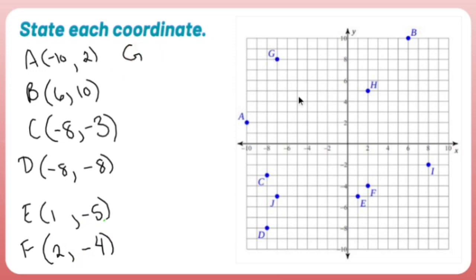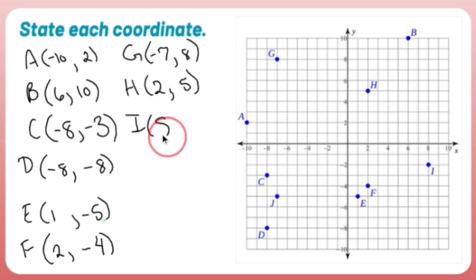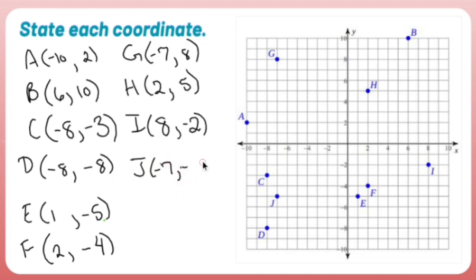I is right 8, down 2 — so I is positive 8, negative 2. J is left 7, down 5 — so J is negative 7, negative 5.